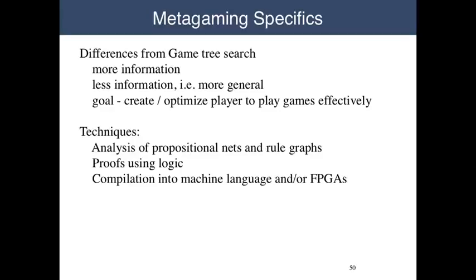In general game playing, we're primarily interested in those types of metagaming that can be automated. This raises the question of distinction between ordinary game playing and metagaming. Can we distinguish the two? Well, it's not that easy, but there are some differences. To begin with, ordinary game tree search can be viewed as a degenerate form of metagaming, one in which the metagamer must find the best action for a specific role in a specific game starting in a specific state. By contrast, in some cases, metagaming involves information and goals that are different from the specifics used in game tree search.